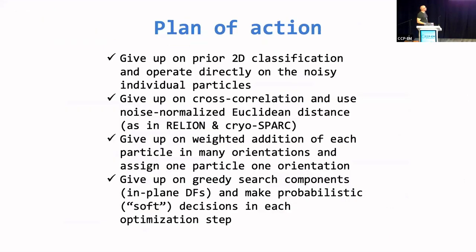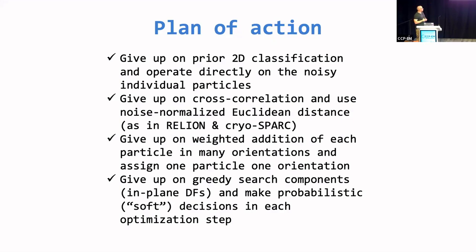The plan of action for resolving this issue was to give up on prior 2D classification and operate directly on the noisy individual particles, because obviously there is a huge advantage in terms of effective signal-to-noise ratio when you start averaging across the common lines of the data, not only in 2D. We also decided to give up on cross-correlation and use noise-normalized Euclidean distance instead as an objective function, because it's simply superior. Also, we decided to give up on weighted addition of each particle in many orientations and decided to assign one particle one orientation. We also gave up on the greedy search component in the optimization of the in-plane degrees of freedom, and we now make probabilistic or soft decisions in each optimization step.